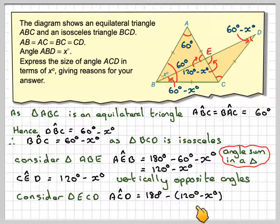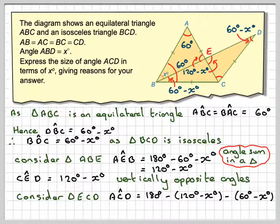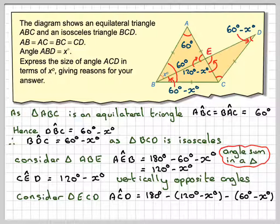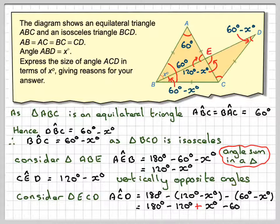And we know that angle ACD will be 180 minus this one here, which is, make sure you put it in brackets, 120 minus X degrees, minus this one here, which is 60 minus X degrees. So that's going to be equal to 180 minus 120, minus times the minus will make plus X degrees, minus 60, minus minus gives you plus X degrees.